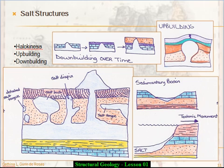Salt has an interesting property in that it is very weak and prone to behave in a ductile way. Just like water has the interesting property of becoming less dense when it freezes, salt becomes less dense as it sinks because it gets heated up. It sinks into the earth, and at depth it gets heated up and there's a little bit of expansion. So you've got salt that can be quite a bit less dense than the rock that overlies it. As the overburden gets heavier, it creates pressure on the salt, and there is oftentimes a lot of movement — that is how salt sneaks its way up to the surface.